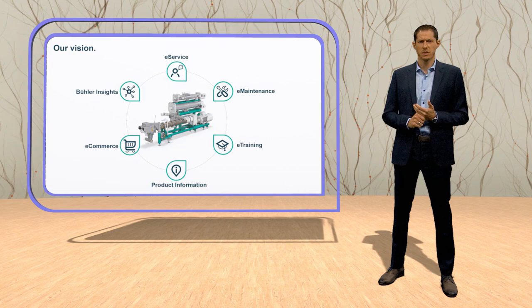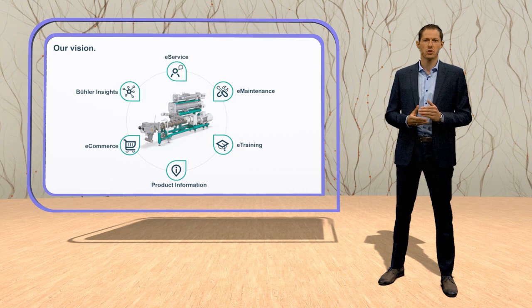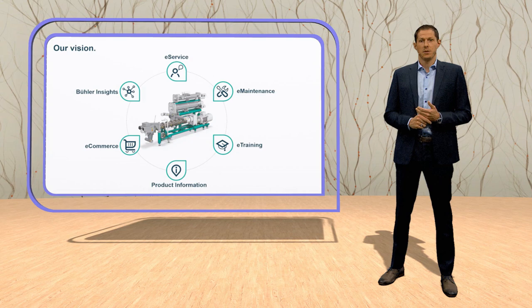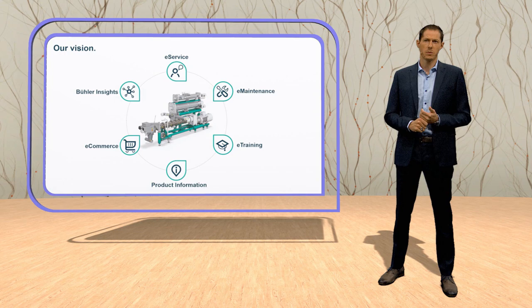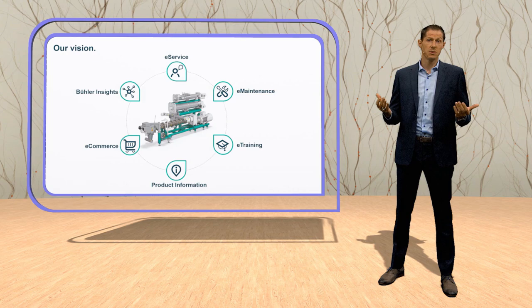In future, for example, through your connected machine you will get information about the predictive maintenance job that needs to be done. With e-commerce you can buy the parts that are required and you will get them delivered just in time. E-training, for example, will show you how to execute the job — you get a training video that shows you how to replace the parts.